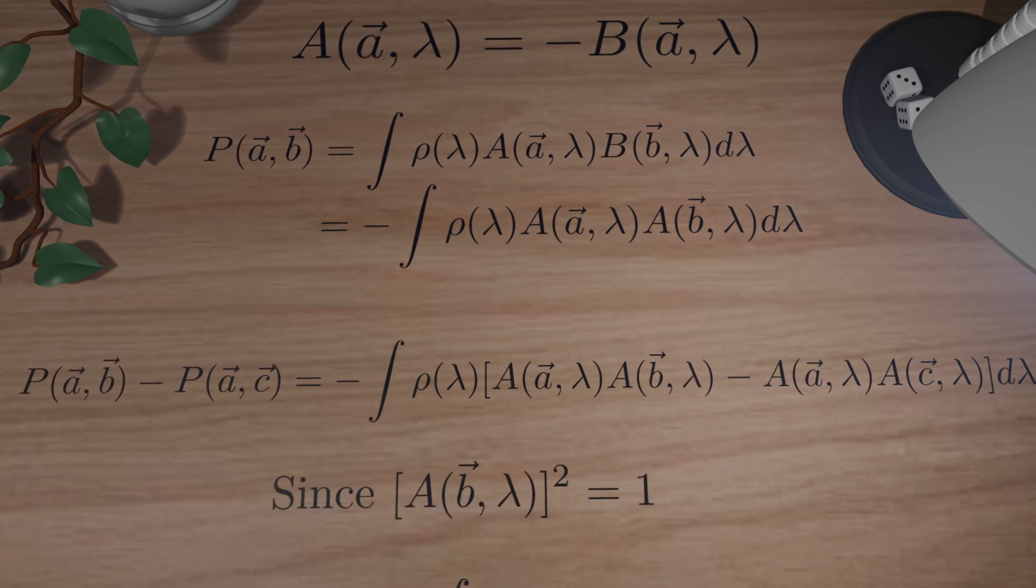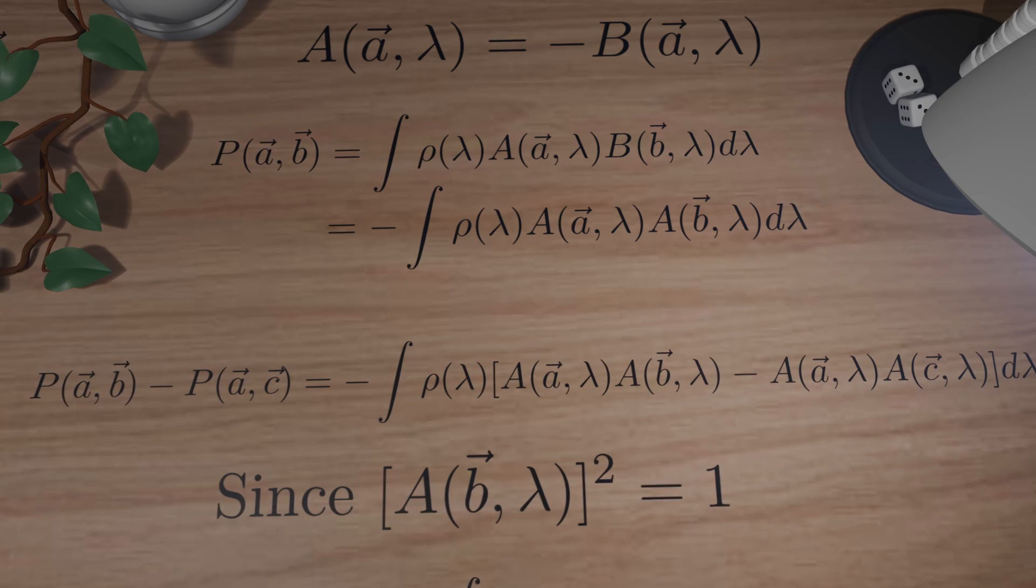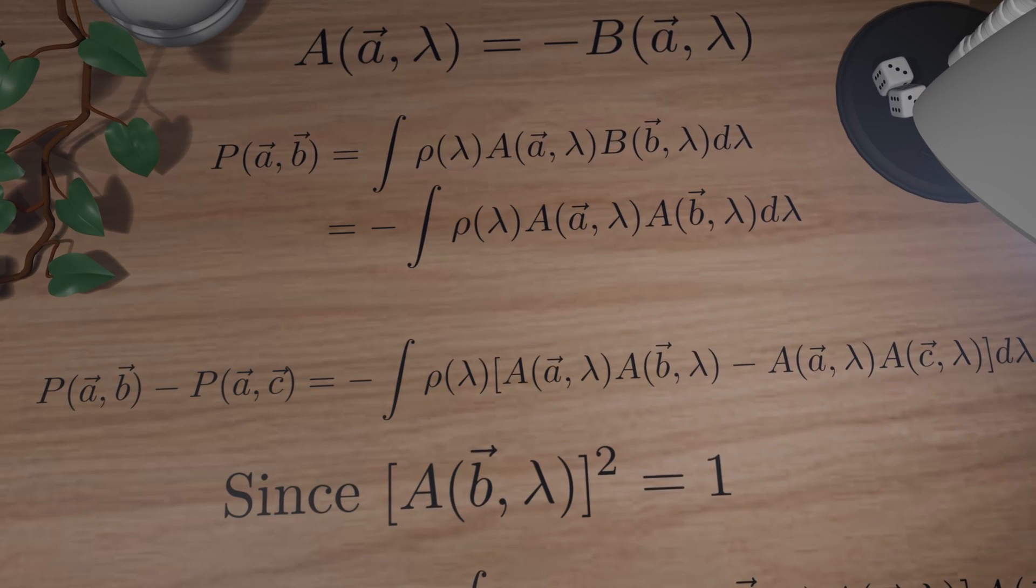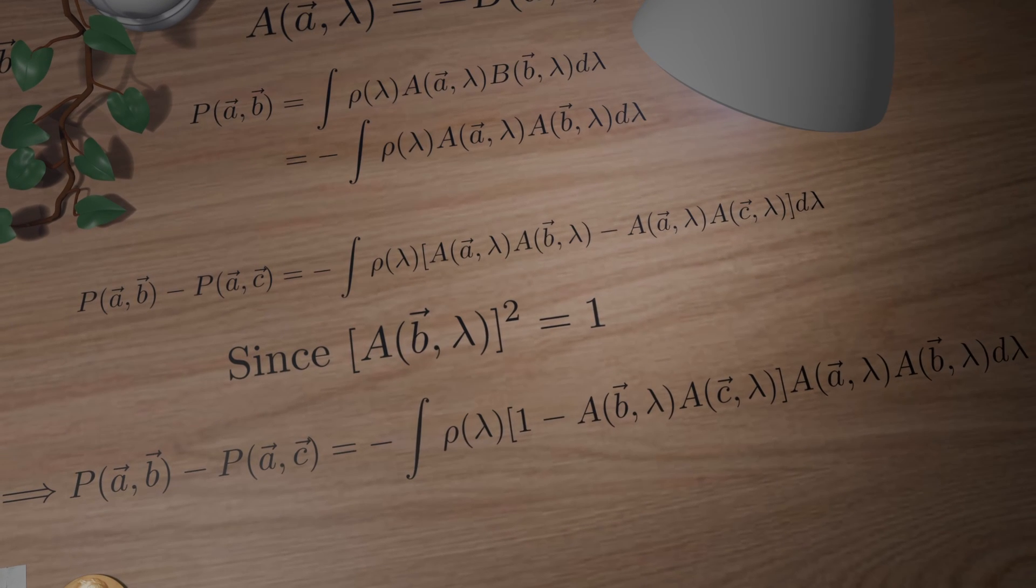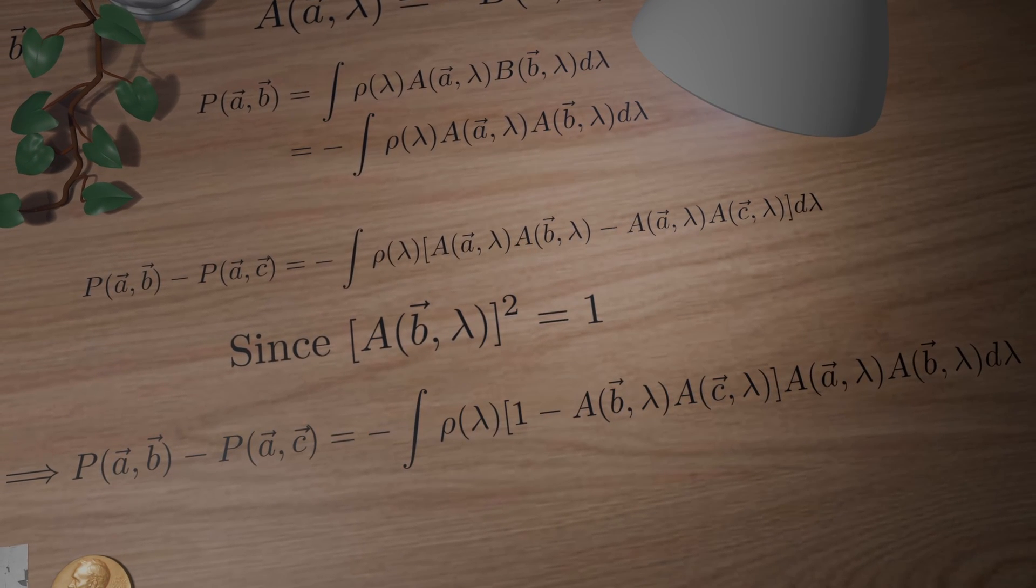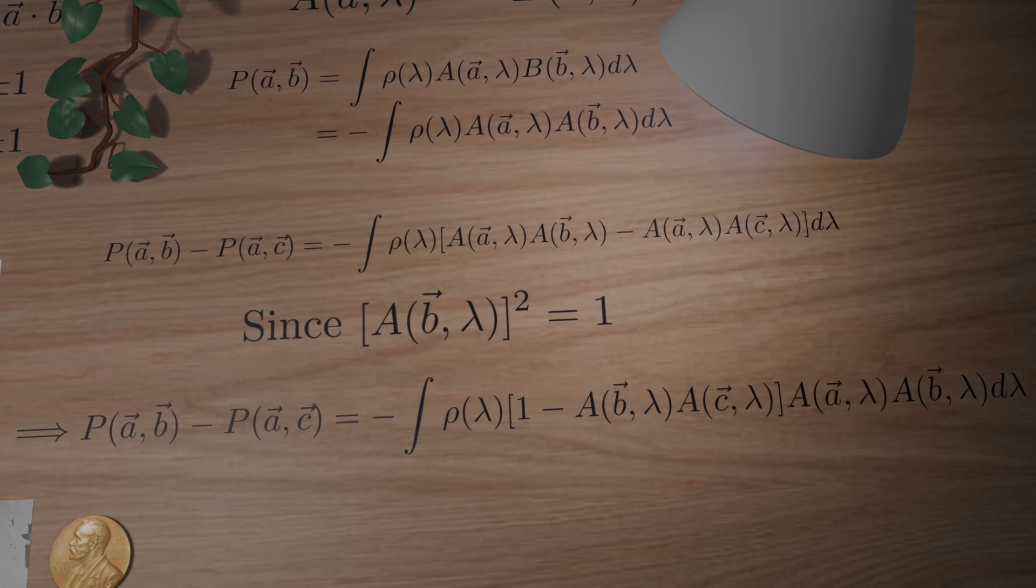We also recognize that A of B Lambda squared is equal to 1, since any real number squared is positive and A can only take values plus minus 1. We can rewrite the equation above, where we just multiply the whole expression with A of B Lambda squared, and factored out A of A Lambda.